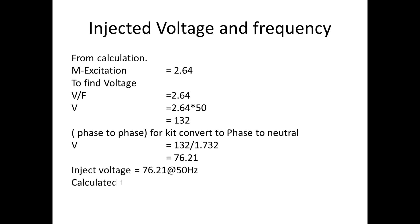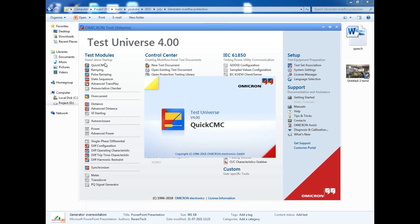For kit injection, we have to convert into phase to neutral. So if you want to convert into phase to neutral, divide by 1.732. We got 76.21. If you want to inject from the kit, we have to inject 76.21 voltage at 50 hertz.